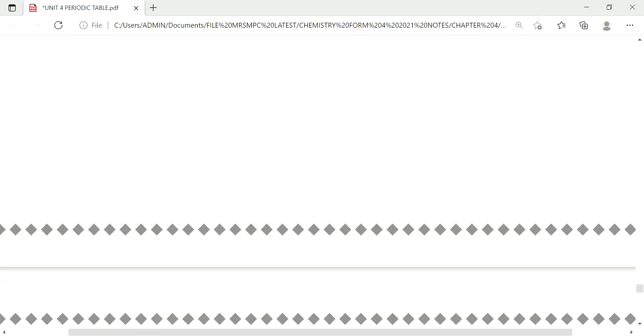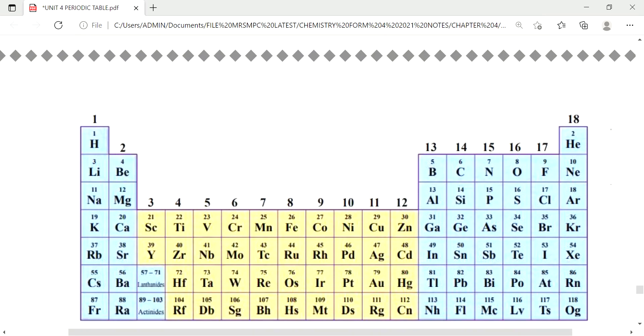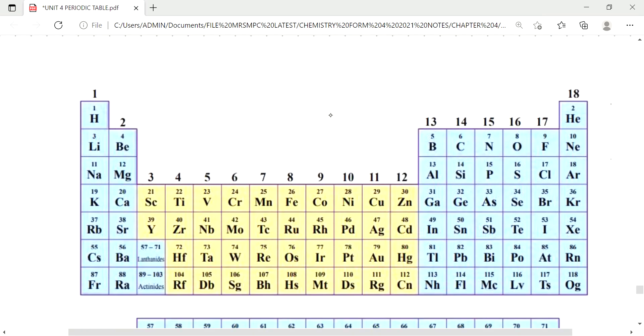So where can we find them in periodic tables? Look at the yellow portion here. So all these elements are transitions element from group 3 until group 12.